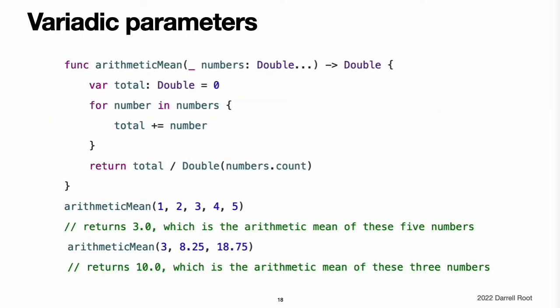Variadic parameters. A variadic parameter accepts zero or more values of a specified type. You use a variadic parameter to specify that the parameter can be passed a varying number of input values when the function is called. Write variadic parameters by inserting three period characters after the parameter type's name. The values passed to a variadic parameter are made available within the function's body as an array of the appropriate type. For example, a variadic parameter with a name of numbers and a type of Double... is made available within the function's body as a constant array called numbers of type [Double]. This example calculates the arithmetic mean — also known as the average — for a list of numbers of any length. A function can have multiple variadic parameters. The first parameter that comes after a variadic parameter must have an argument label, making it unambiguous which arguments are passed to the variadic parameter and which are passed to subsequent parameters.